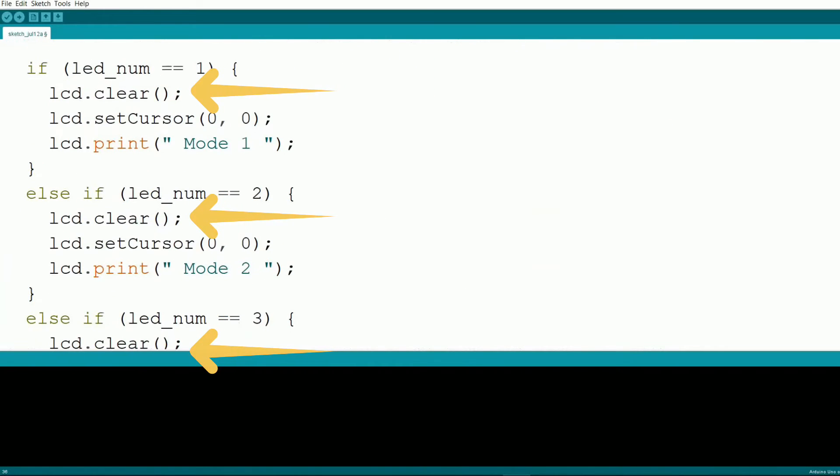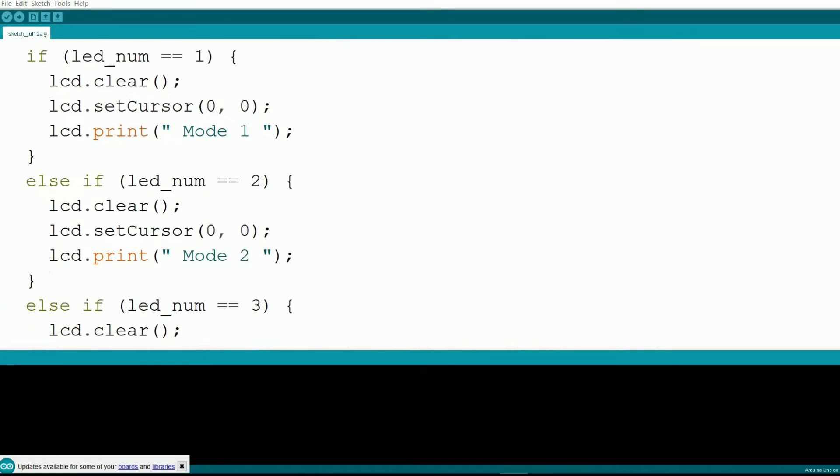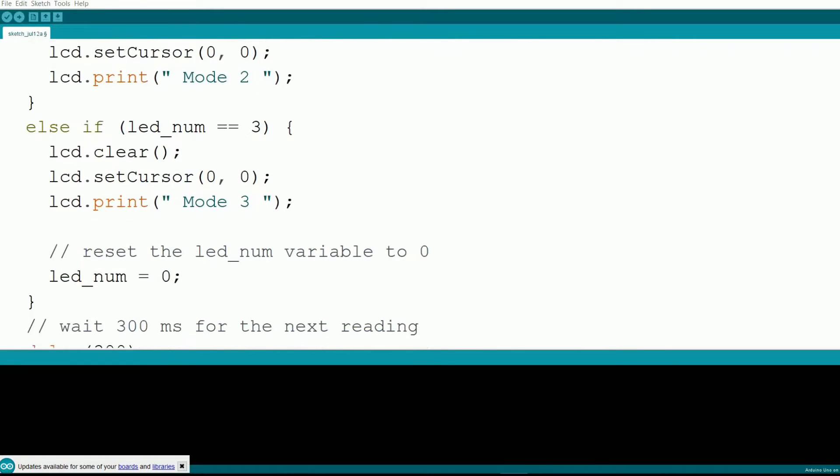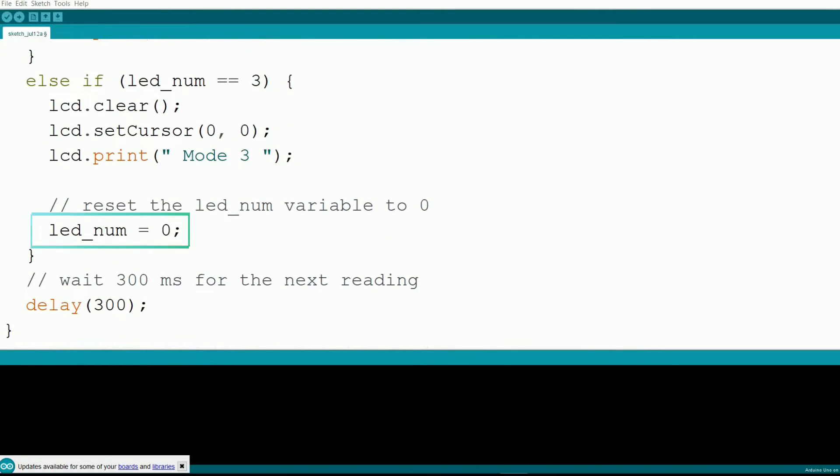Depending on the value of led_num, we clear the LCD and display the corresponding mode. When led_num reaches 3, it resets to 0 to start the cycle over. The delay 300 function ensures a 300 millisecond pause between readings to debounce the button and avoid multiple triggers from a single press.